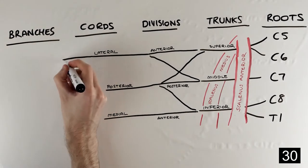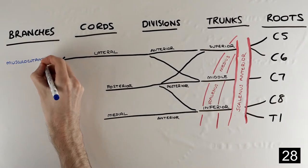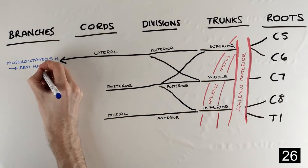Then lastly we have our terminal branches. The lateral cord becomes the musculocutaneous nerve supplying the major arm flexors.